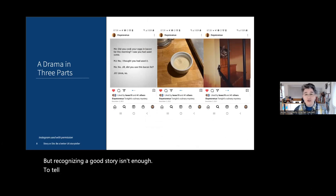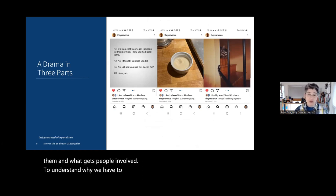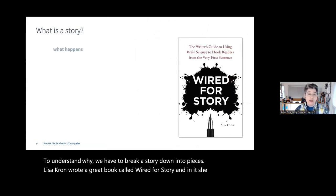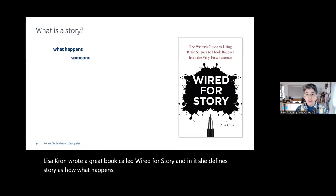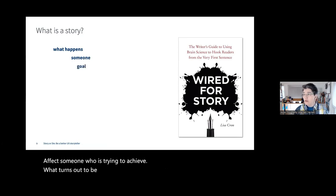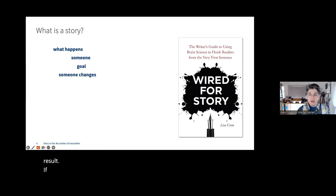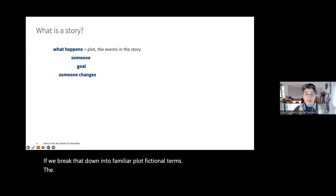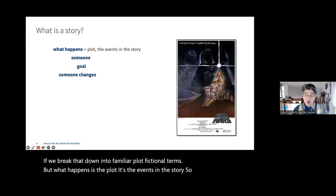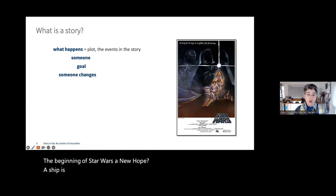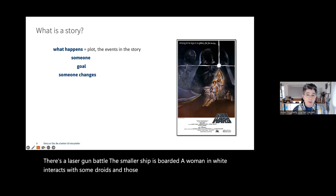To understand why we're motivated by stories, we have to break a story down into pieces. Lisa Cron wrote a great book called Wired for Story, and in it she defines story as: how what happens affects someone who is trying to achieve what turns out to be a difficult goal, and how that person changes as a result. If we break that down into familiar plot terms: the 'what happens' is the plot — the events in the story.